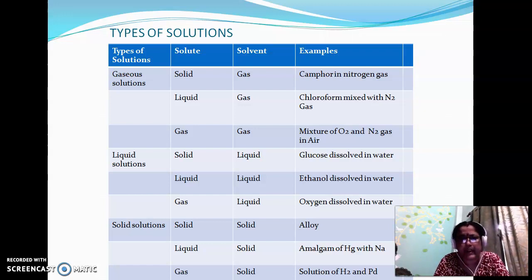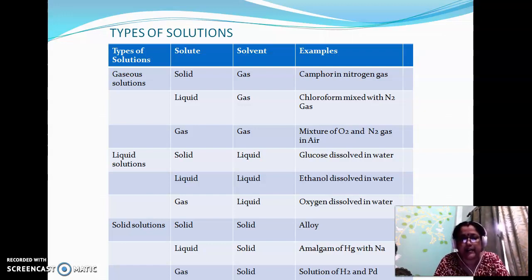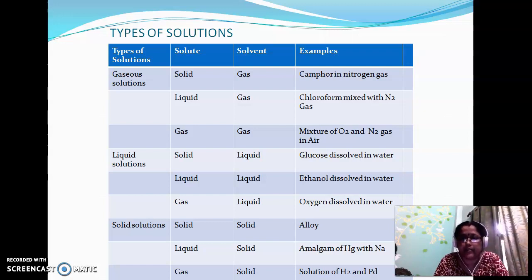An example is camphor in nitrogen gas. The next category is when the solute is liquid and the solvent is gas. The example is chloroform mixed with nitrogen gas. The last category of this section is a mixture of gaseous solute and gaseous solvent.